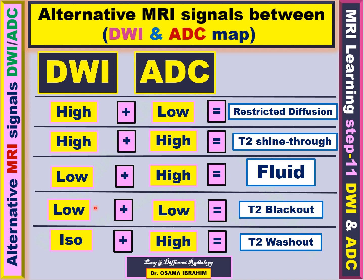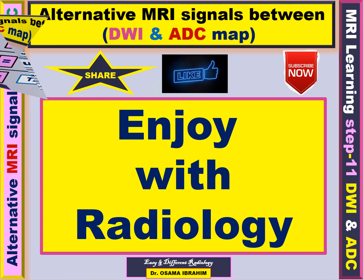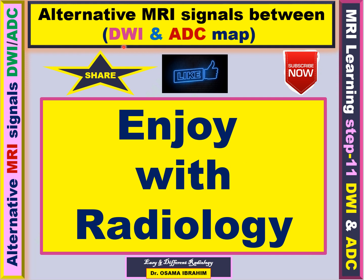So these are the alternative signals between diffusion-weighted image and ADC, along with the clinical expression for each signal. What each one represents, we will see and discuss in the next cases. Let us enjoy radiology with these next five cases with different alternative signals between diffusion-weighted image and ADC, and see how to express them and what is the clinical significance.